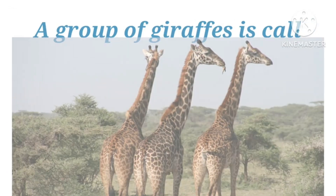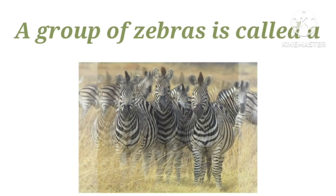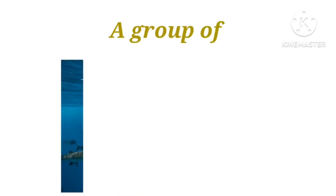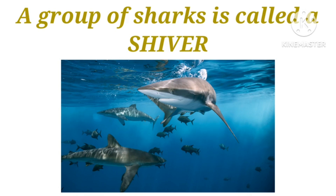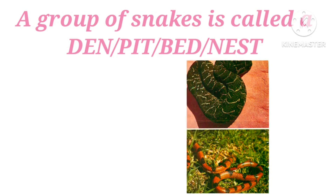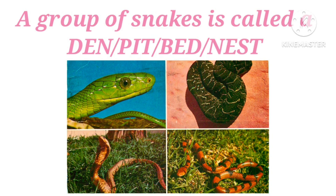A group of giraffes is called a tower. A group of zebras is called a dazzle or zeal. A group of sharks is called a shiver. A group of snakes is called a den, pit, bed, or nest.